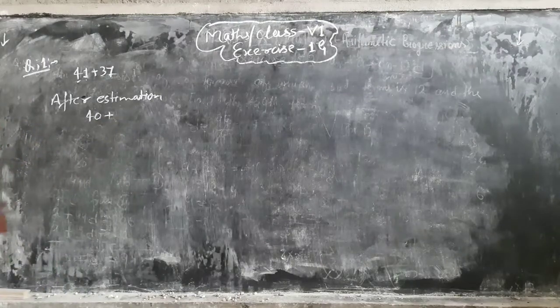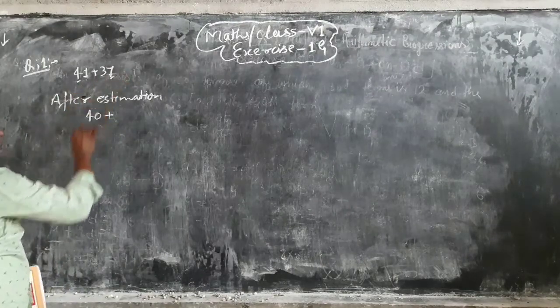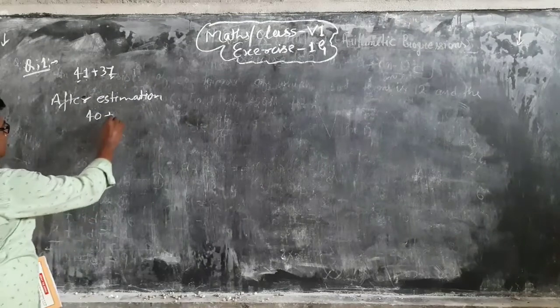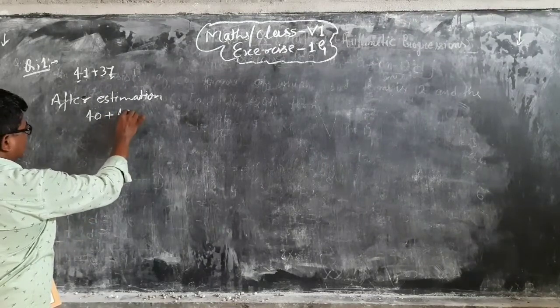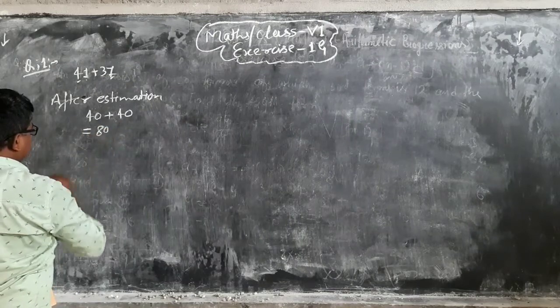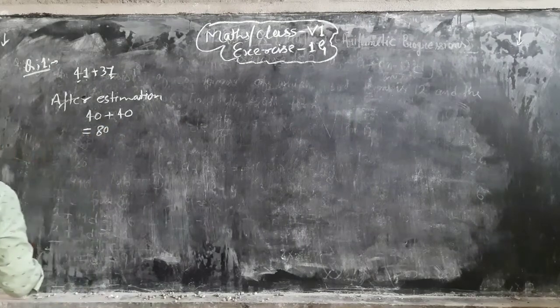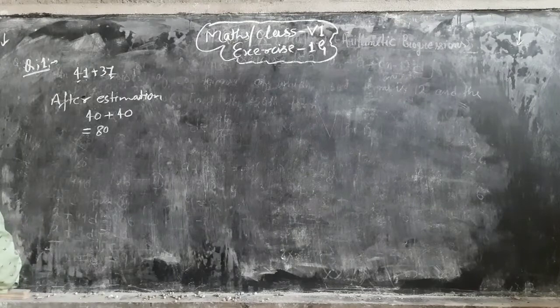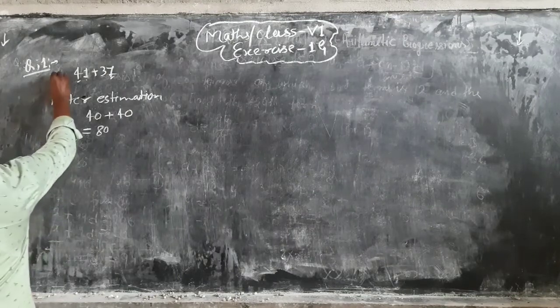And then 37, what will happen? 7 is more than 5. So in 10 places, 3, 1 and 4, and also 0. So 40 plus 40. After estimation, it will be 80. Okay?